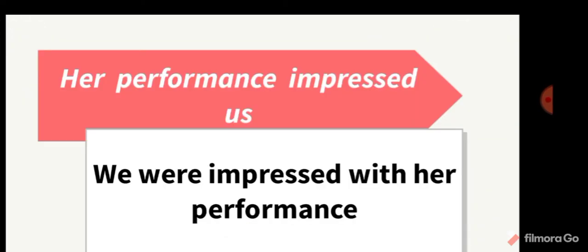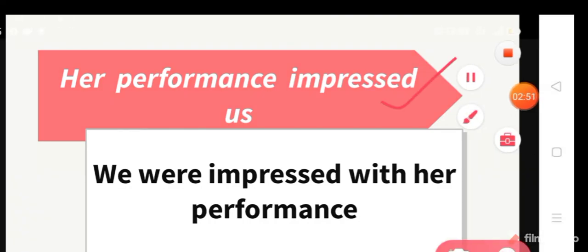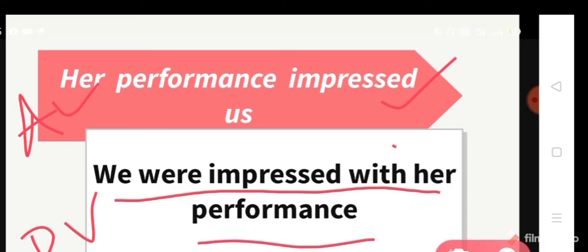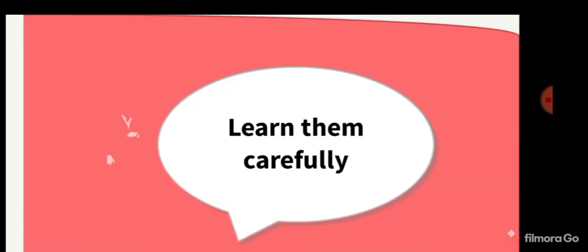Let us look at the example. The active voice is: 'Our performance impressed us.' Now make it passive voice. The passive voice is: 'We were impressed with her performance' — not 'by her performance.' Impressed with. This is the third rule.